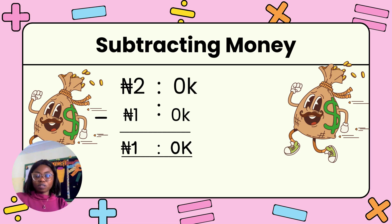Subtraction of money: 2 naira 0 kobo minus 1 naira 0 kobo, we have 1 naira 0 kobo.